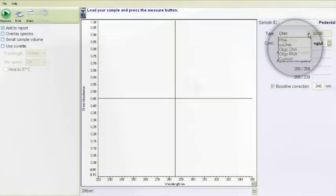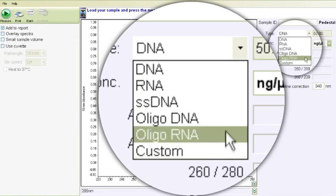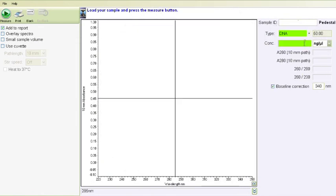Once the blank measurement is complete, clean both optical surfaces with a laboratory wipe as before. Choose the appropriate constant for the sample that is to be measured.